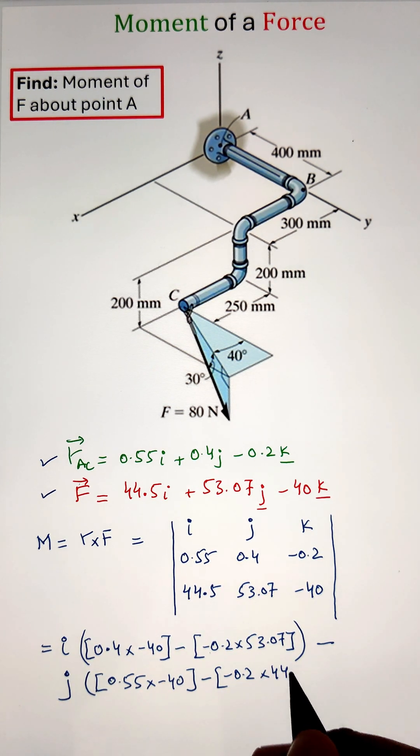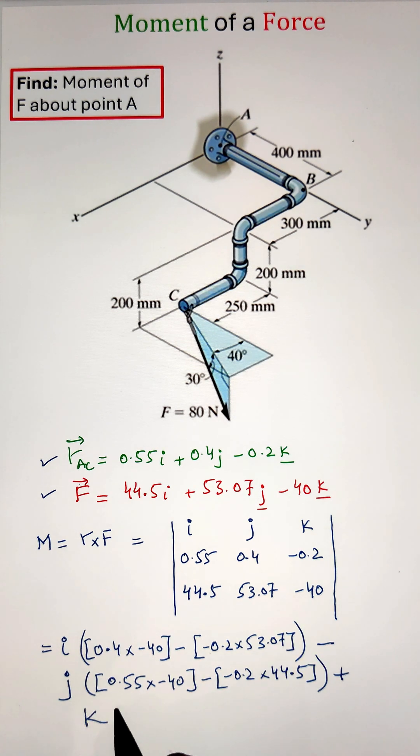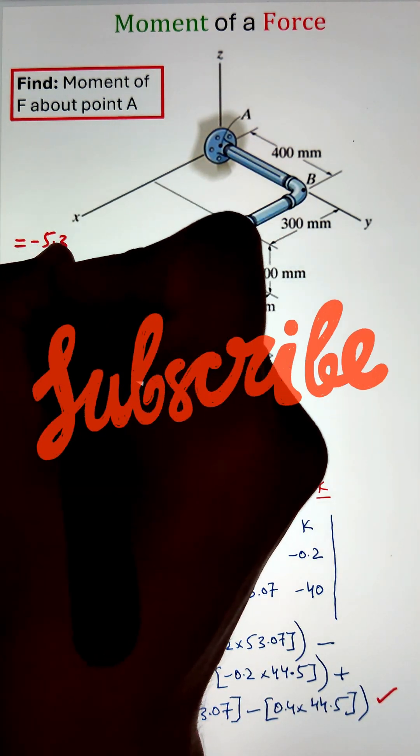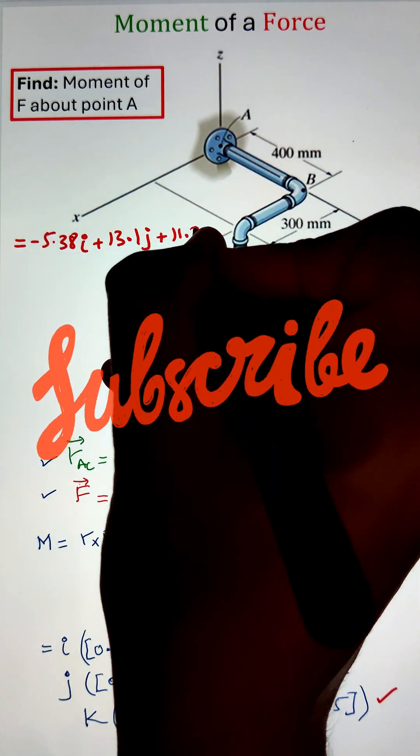Finally, simplifying the cross product, we get the moment value of negative 5.38i plus 13.1j and 11.38k newton meters.